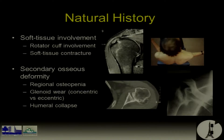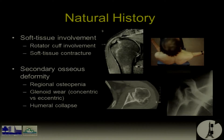Most of the time, these patients don't just have a bony problem. They have soft tissue involvement — the rotator cuff is not always normal — and soft tissue contractures, with stiffness from capsular contractures. Most of the time, these patients have lost their external rotation. This arthritis is associated with osseous deformities like osteopenia, and glenoid wear that can be concentric or eccentric, particularly posterior wear, which is the most difficult part to treat.